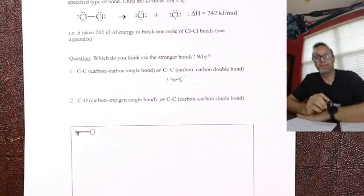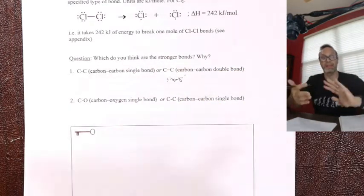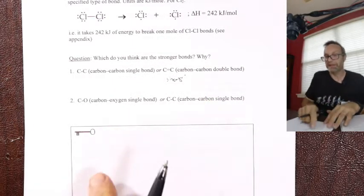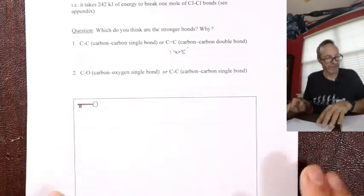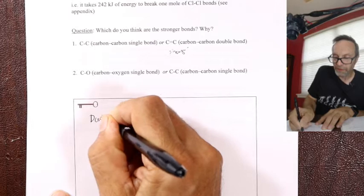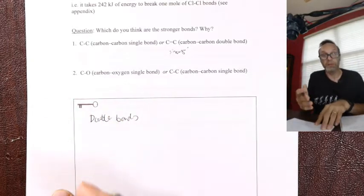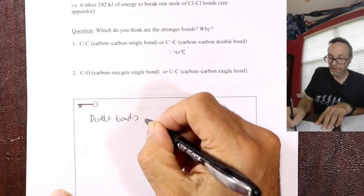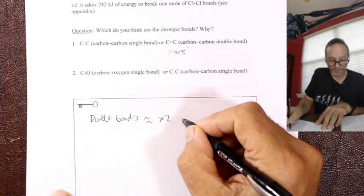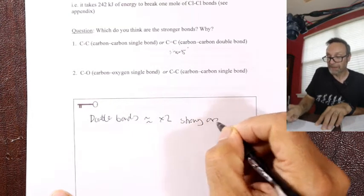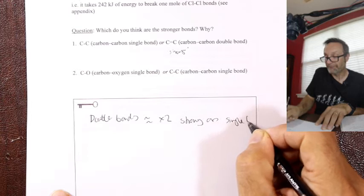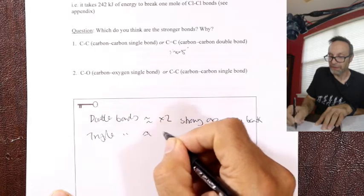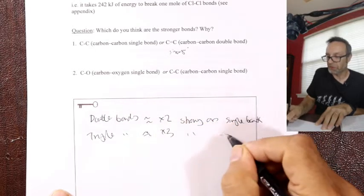Why? It's just a simple concept. Instead of holding hands once like a single, we're holding hands twice - like the legendary Scottish country dancing. Double bonds, because you're sharing two pairs of electrons rather than one, are approximately twice as strong as single bonds. And we can also say triple bonds, if we ever see one, are approximately three times as strong as single bonds.